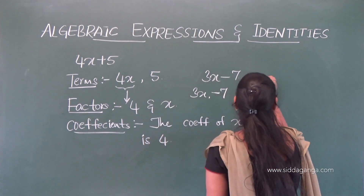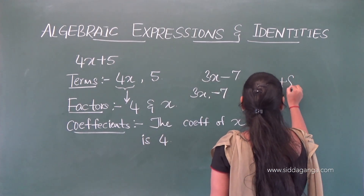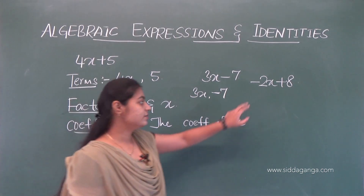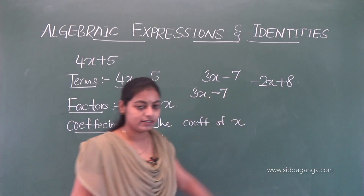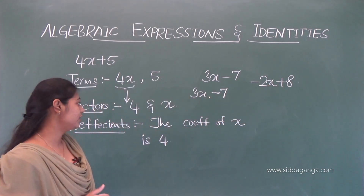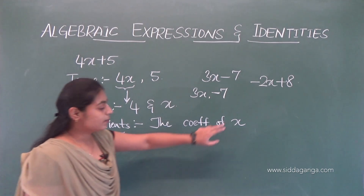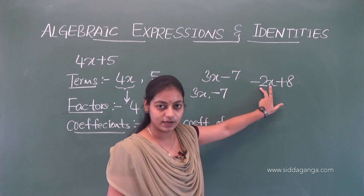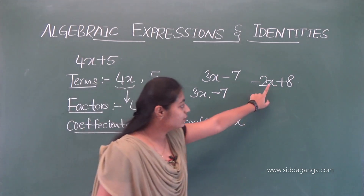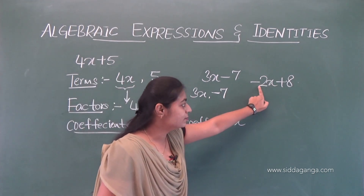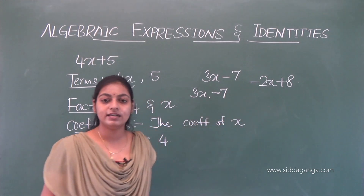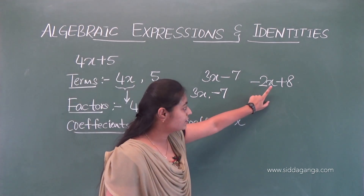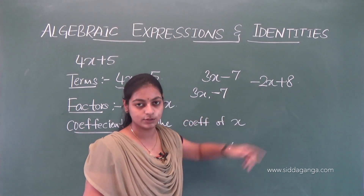In the case of minus 2x plus 8, there are two terms: minus 2x and 8. Minus 2 and x are the factors of minus 2x. So the coefficient of x is minus 2.